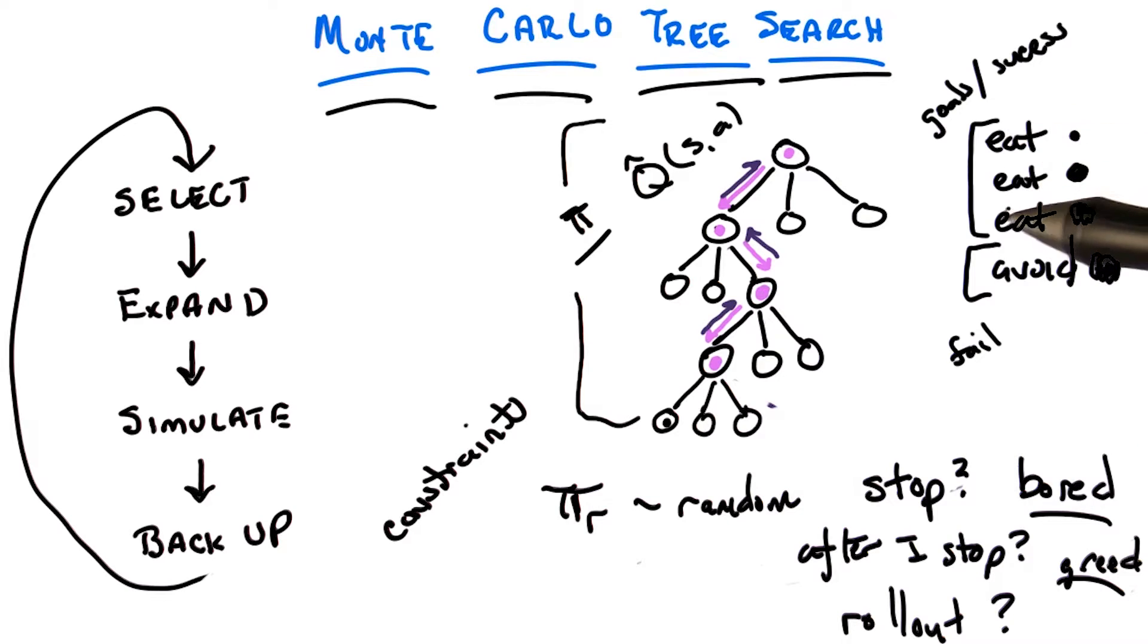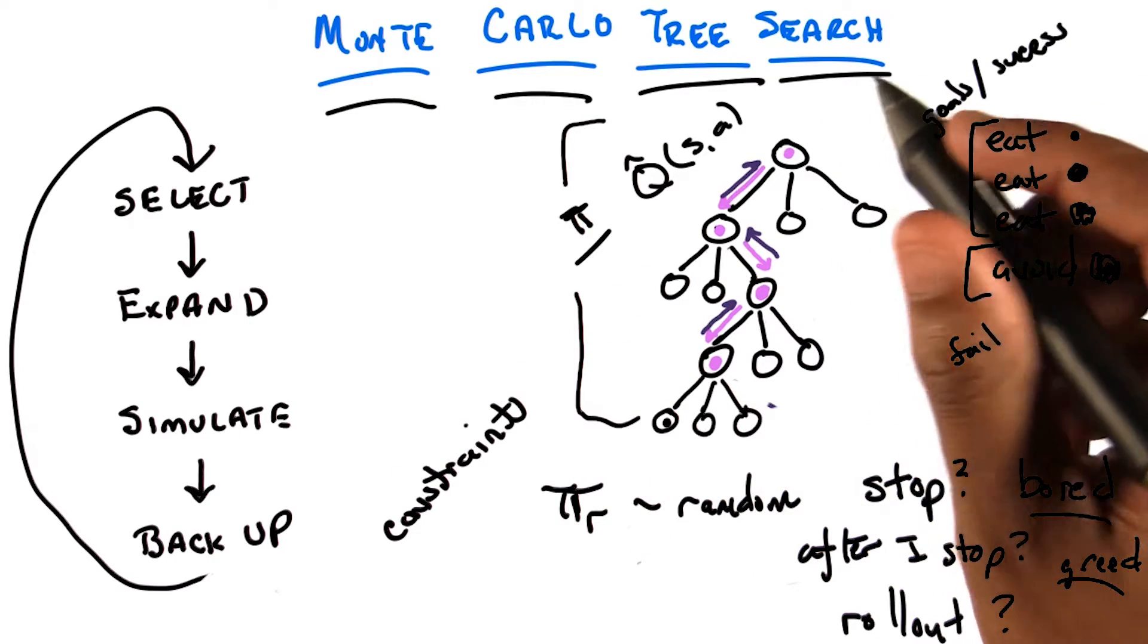So here you have goals you're trying to accomplish, sort of positive things you're trying to do, and then you have constraints. Basically, I want you to eat little dots, eat big dots, and eat big ghosts while honoring the constraint that I don't want you to be eaten by a non-scared ghost.